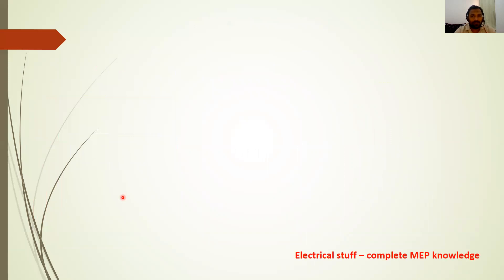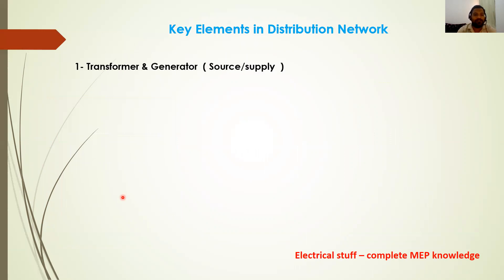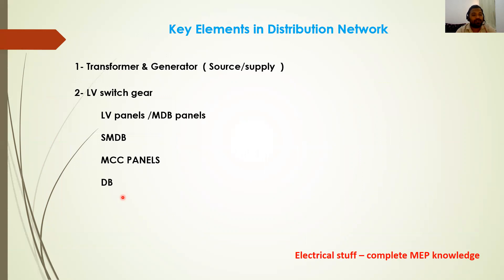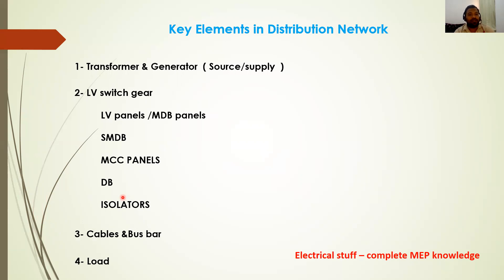The key elements in a distribution network are: first, the transformer or generator as the source; second, LV switchgear — which includes main distribution panels, sub-main distribution panels, MCC panels, distribution boards, and isolators; third, cables and busbars that transmit power from one point to another; and finally, the load.